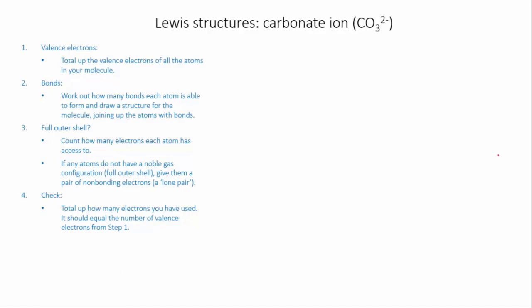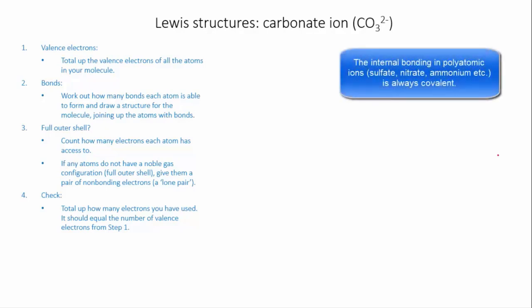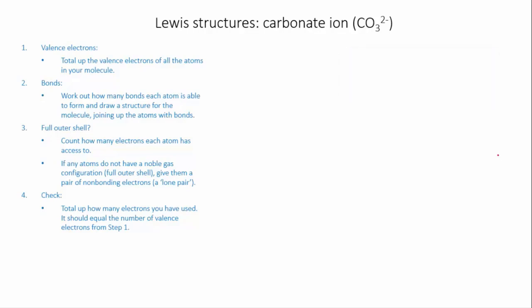So the carbonate ion, although it's an ion and it participates in ionic bonding, within the ion itself the carbon and the oxygen atoms are joined to each other by covalent bonds. So we're going to draw this structure and it follows the same set of procedures that we did for the neutral molecules. There's just one extra thing that you need to know and it comes in the first step.